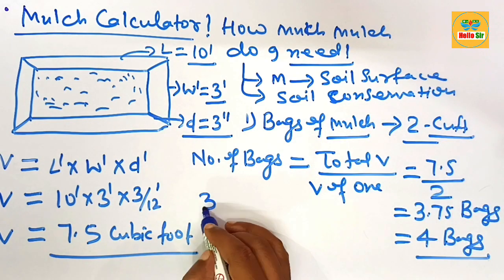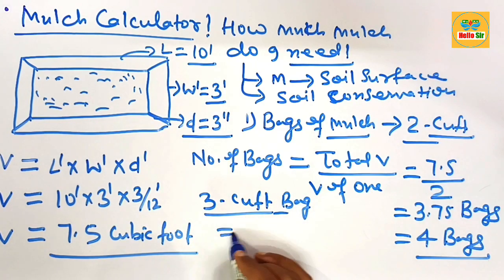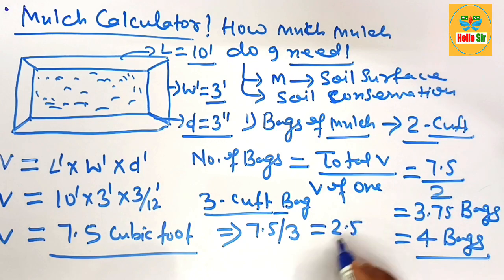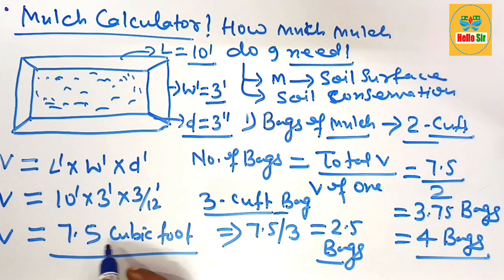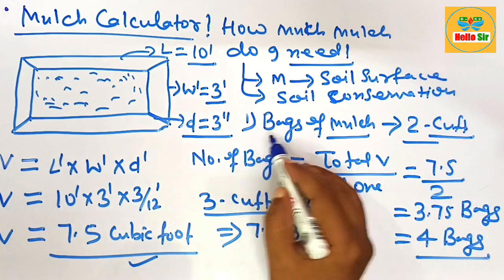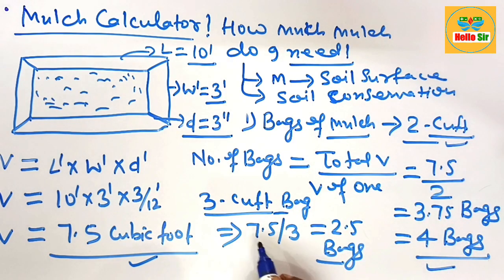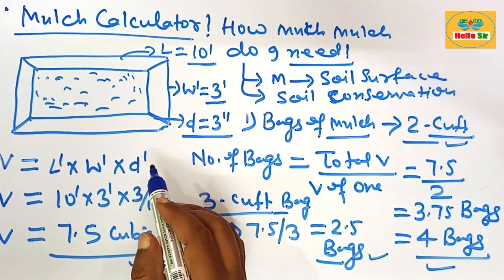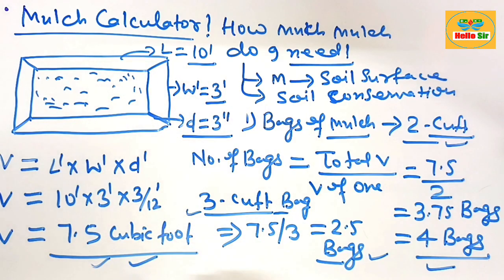If you use 3 cubic foot bags of mulch, then 7.5 ÷ 3 = about 2.5 bags. To summarize: for this project you need 7.5 cubic feet of mulch total. If using 2 cubic foot bags, you need approximately 4 bags; if using 3 cubic foot bags, you need 2.5 bags. This is your mulch calculator, which helps figure out mulch quantity in cubic feet and number of bags needed.